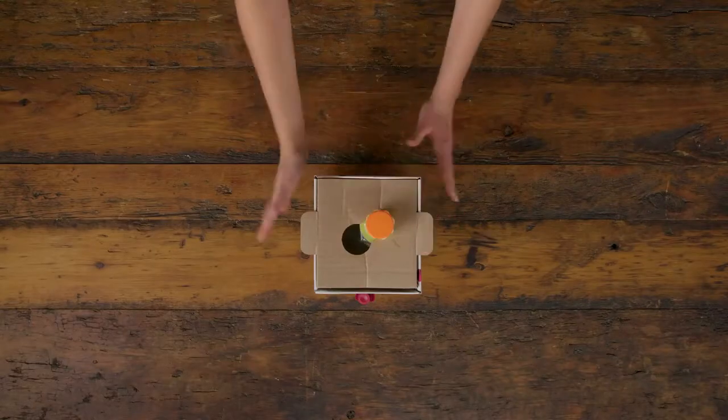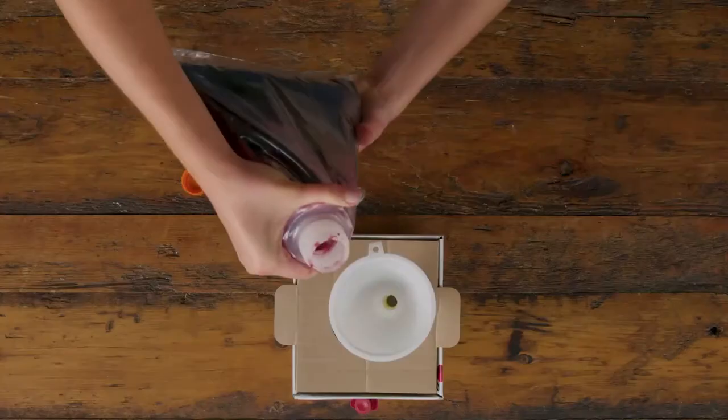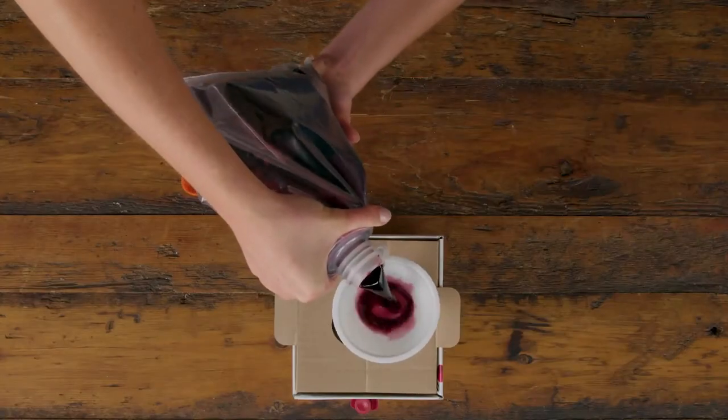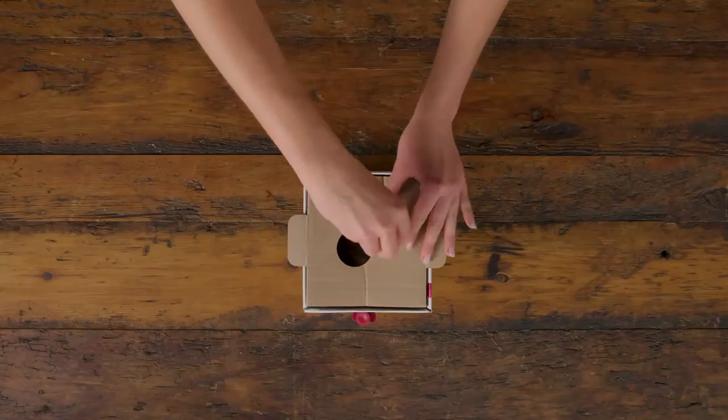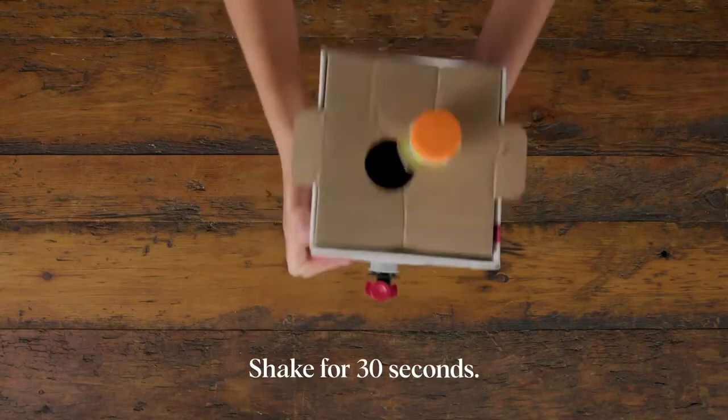Screw on the cap and shake for one minute. Add the juice blend slowly and then add the yeast. Screw on the cap and shake for 30 seconds.